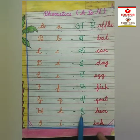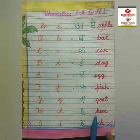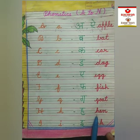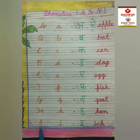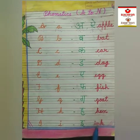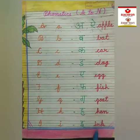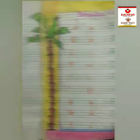H says H — hen. H says H — hen. Which sound is coming from hen? H sound. I says E — ink. I says E — ink.